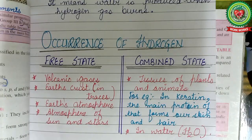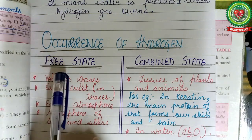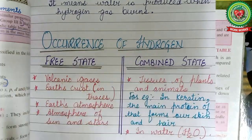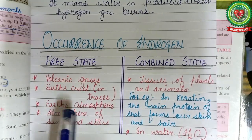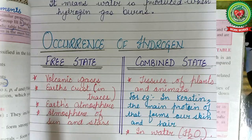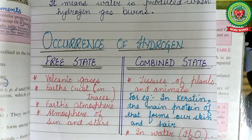Hydrogen is the most abundant element in the universe and one of the lightest elements. Giant planets such as Jupiter and Saturn contain mostly hydrogen. Hydrogen makes up about half the mass of the sun and stars. In free state, hydrogen is present in volcanic gases, in the Earth's crust, and in the Earth's atmosphere in traces. The atmosphere of the sun and stars also contains hydrogen, where hydrogen atoms combine to form helium.